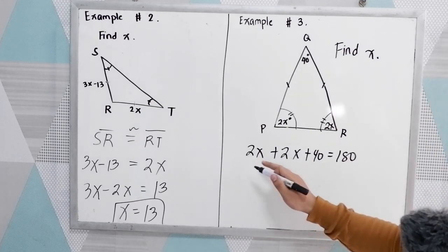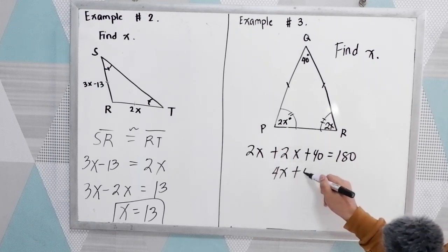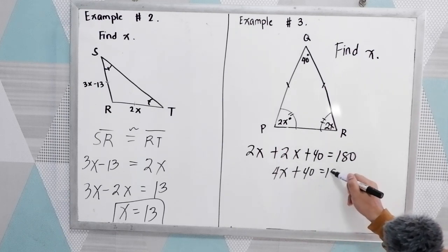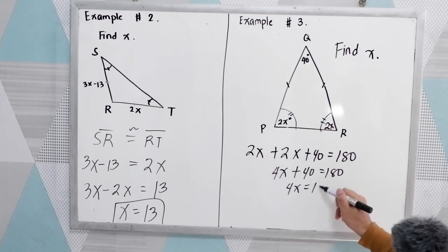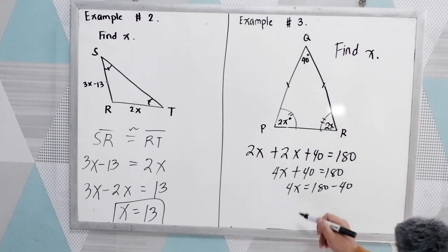So 2X plus 2X, that is 4X plus 40, is equal to 180. 4X plus 40, is equal to 180, and suppose minus 40. 4X is equal to 140.